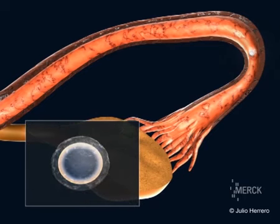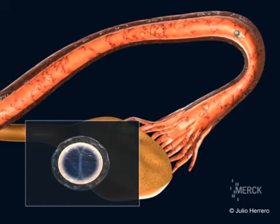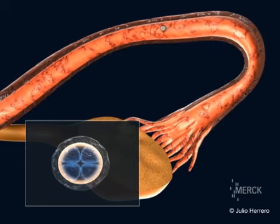One day following fertilization, a cell with two nuclei is observed, at which point it is called an embryo, and it begins to divide itself. Two days after fertilization, the embryo is made up of two to four cells, and moves along the tube in the direction of the uterus.